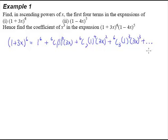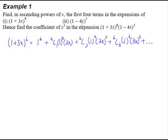We actually have some more terms behind. The only thing is that we are not really concerned because we are concerned with the first 4 terms. If the power is 6, when fully expanded there should be 7 terms. We are not going to do all 7 terms — we only want the first 4.